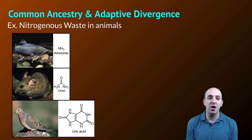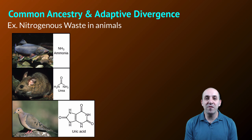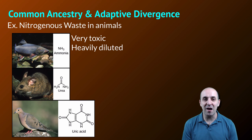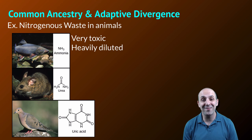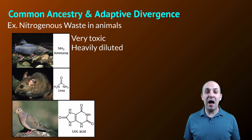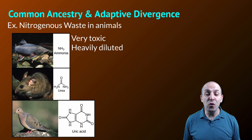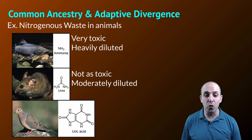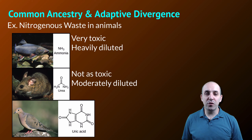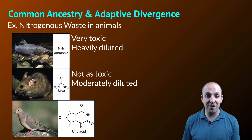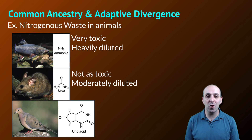We can see a similar thing if we look at the production of nitrogenous waste in animals. Organisms that live in aquatic environments produce their nitrogenous waste as ammonia, which is incredibly toxic and needs to be heavily diluted. This is not a problem if you live in water because you're constantly taking in water, and so your urine can have a high concentration of water to dilute the very toxic ammonia. Mammals can't do that. Our nitrogenous waste is urea, which is not as toxic as ammonia, so it does not need to be diluted as much — advantageous since we do not have constant access to water the way aquatic animals do.